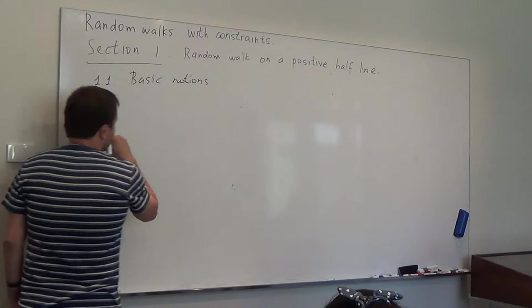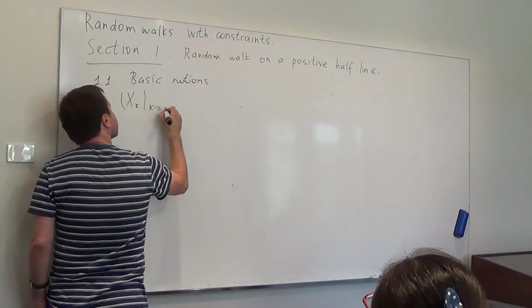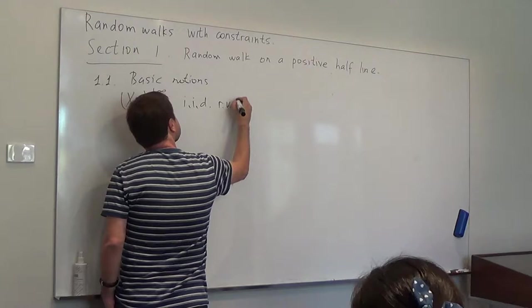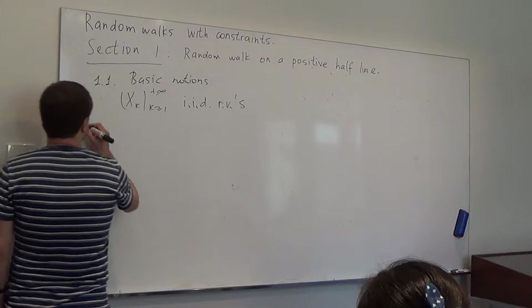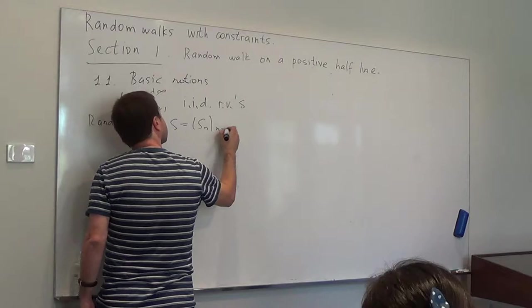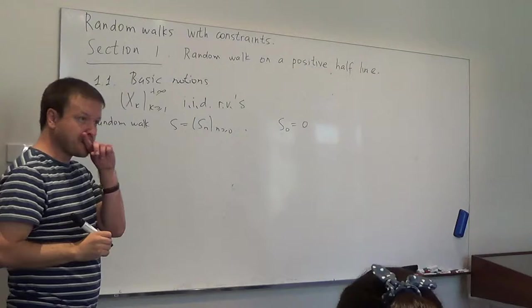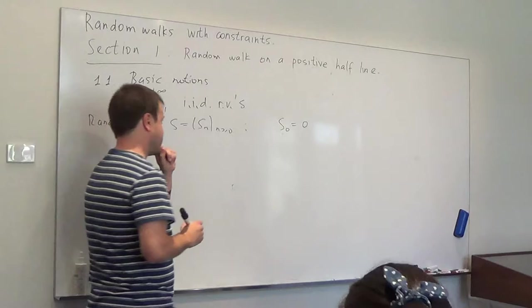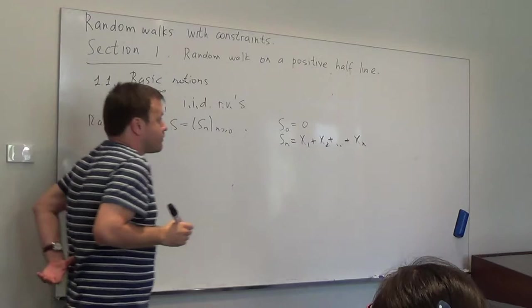Let's call it section 1.1 and set up the notation. We will have a sequence of IID — independent and identically distributed — random variables. In the beginning I will consider the classical random walk, defined for integers n as follows: S₀ is equal to zero, and Sₙ is the sum of the first n random variables. No assumptions at the moment; they will follow very soon.